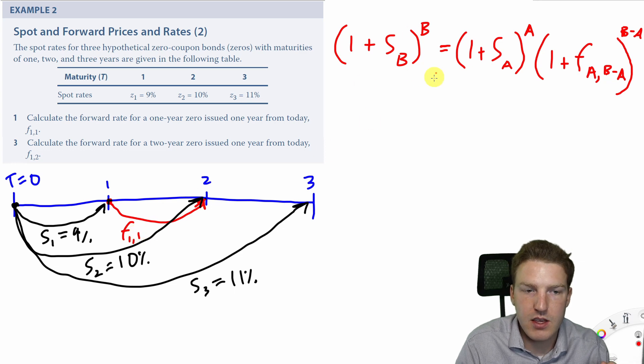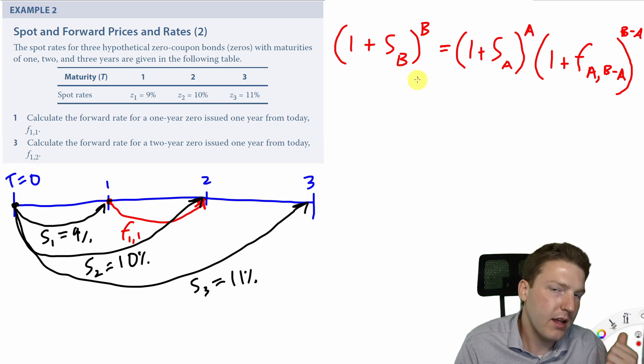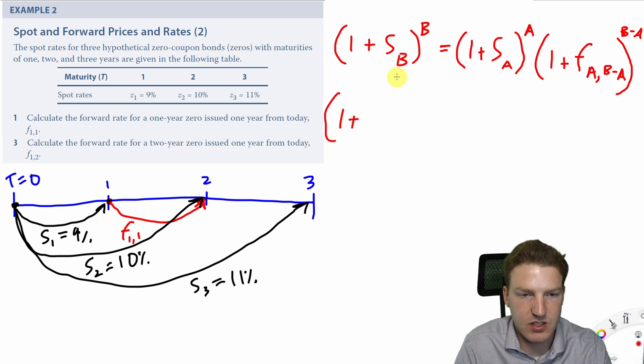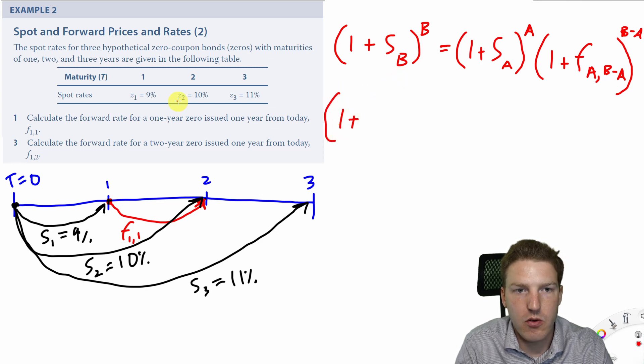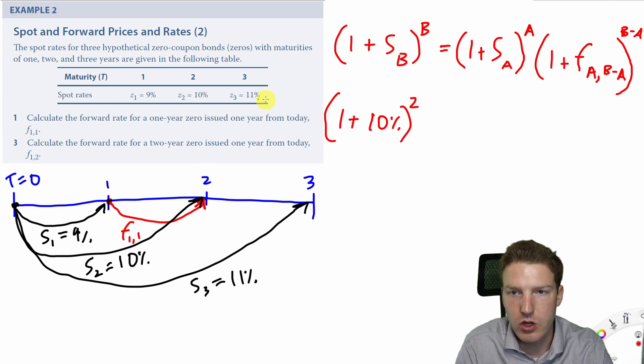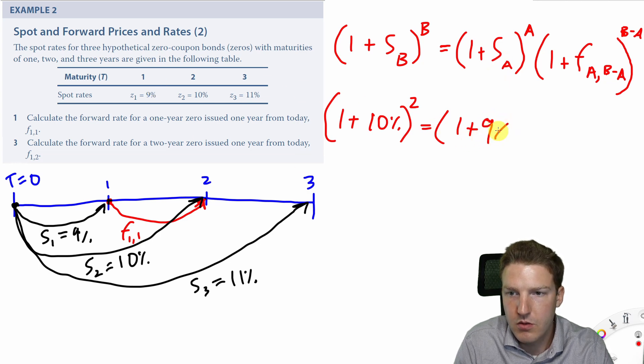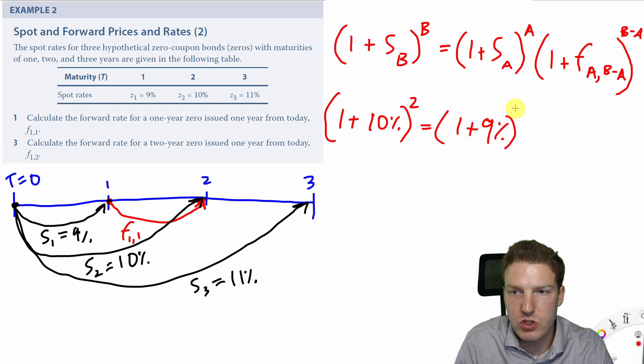So we can find that using this formula we showed earlier. So this would just be 1 plus Sb, which is the spot rate, the 2 year spot rate of 10%, to the power of 2, because that's 2 years out into the future, is equal to 1 plus Sa, which is the 1 year spot rate of 9%, to the power of a, which is actually just 1, it's the 1 year spot rate.